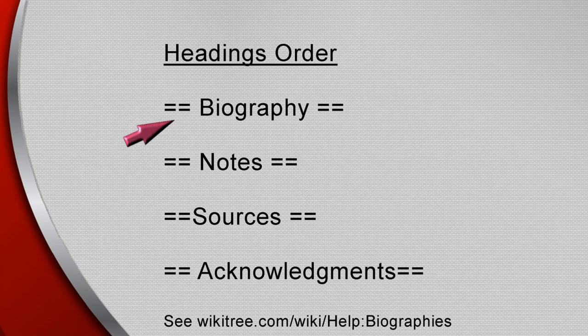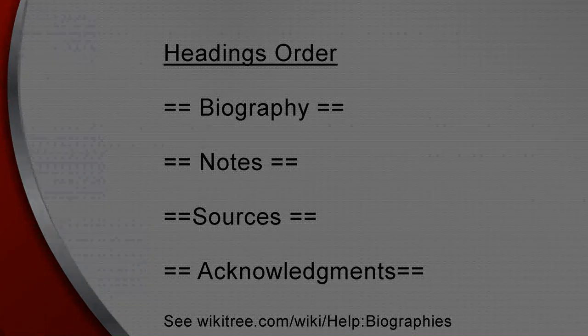Levels are top headings with two equal signs on each side of the title, and subheadings with three or more equal signs on each side. Top headings are in this order: Biography, Notes, Sources, and Acknowledgements.